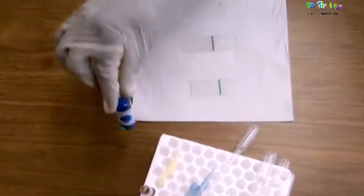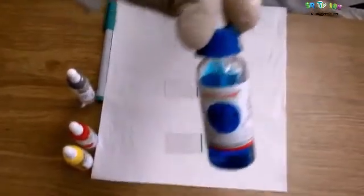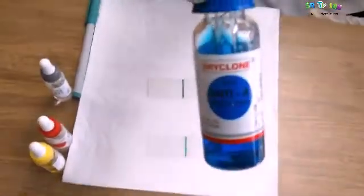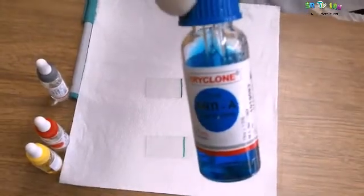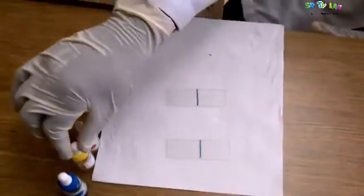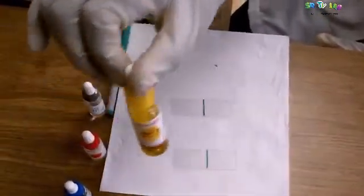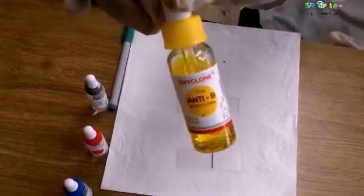In order to know the blood group, you need these reagents. This is antibody anti-A, which means it is against antigen A. This is the antibody anti-B.